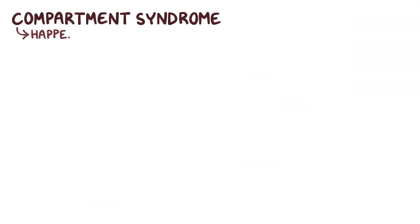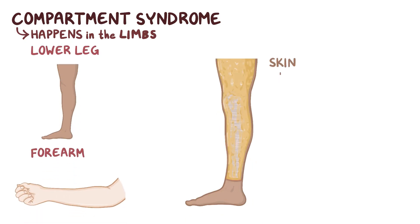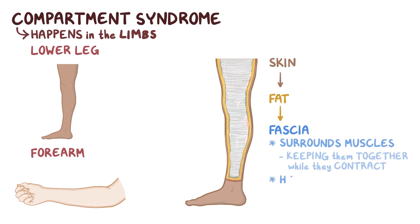Compartment syndrome typically happens in the limbs, usually in the lower leg or the forearm. If we remove the skin and then remove the fat from the lower leg, we would uncover the fascia. Fascia surrounds the muscles, keeping them tightly together while they contract to move the limb, and it also helps attach these muscles to the bones.